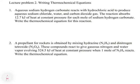In lecture problem two, we have two examples of writing a thermochemical equation. The first says: aqueous sodium hydrogen carbonate reacts with hydrochloric acid to produce aqueous sodium chloride, water, and carbon dioxide gas. The reaction absorbs 12.7 kilojoules of heat at constant pressure for each mole of sodium hydrogen carbonate. Step one is to write the balanced equation.